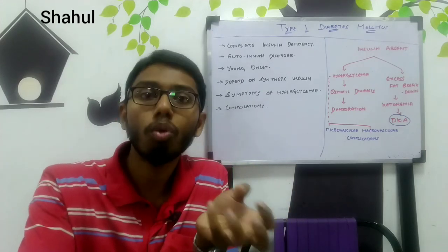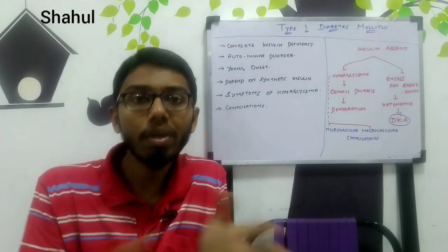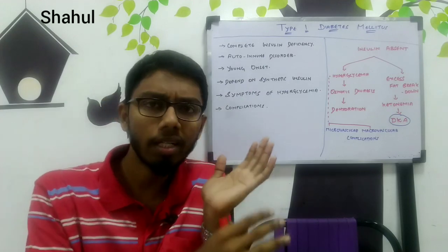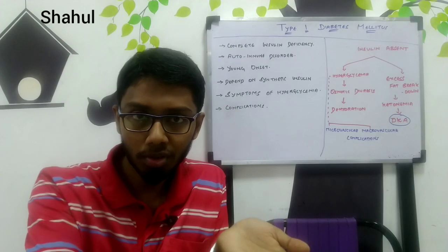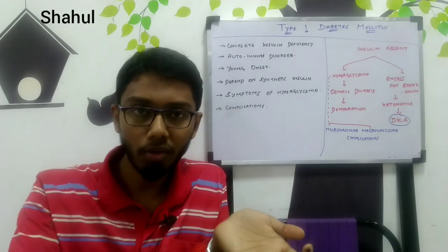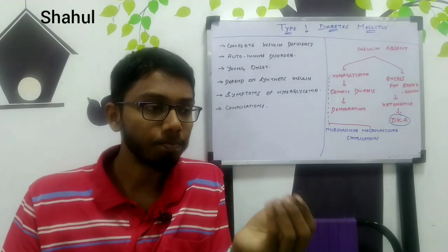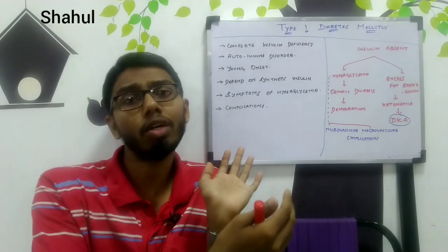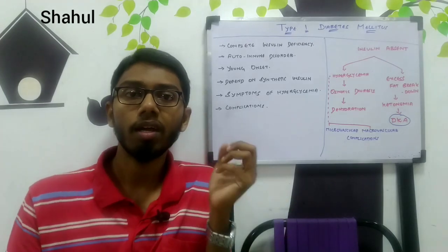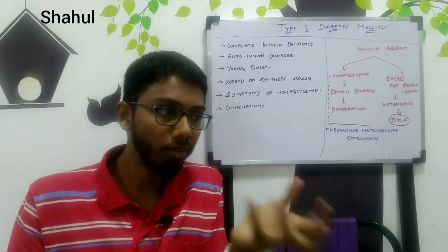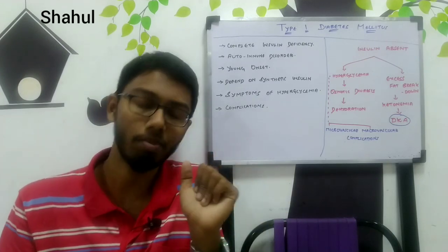After some time, we no longer have the beta islets of Langerhans to synthesize insulin, so there is complete insulin deficiency in Type 1 diabetes mellitus. The age of onset is very early — since autoimmune disorders typically present at 15 to 30 years of age. If a patient presents with early onset diabetes, we need to suspect Type 1 diabetes mellitus.